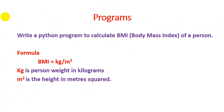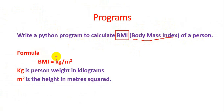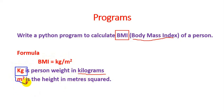Hello friends, we are going to write a Python program to calculate BMI — Body Mass Index of a person. The formula is: BMI equals kg divided by m square, where kg is the person's weight in kilograms, and m square is the height in meters squared.